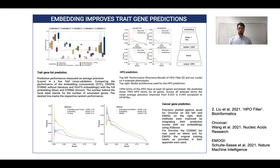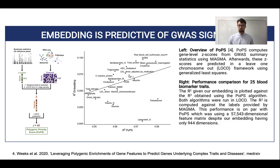In the lower two panels, we checked whether we can improve state-of-the-art cancer driver gene prediction tools, OncoVar and Emogi, by integrating our embeddings with them. To do so, we took their predictions, combined them with our embedding, and trained an XGBoost algorithm on top of this. In both cases, we could show that we can improve these prediction tools by integrating our embeddings.